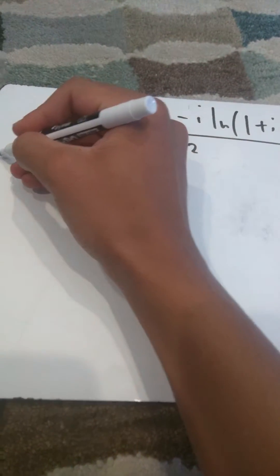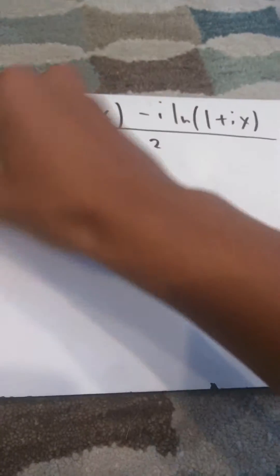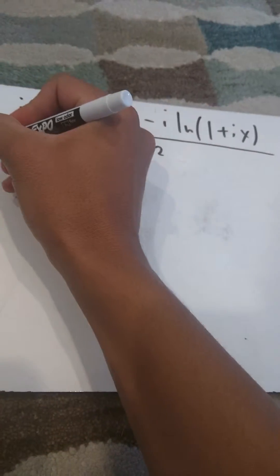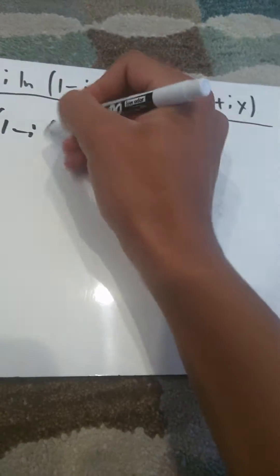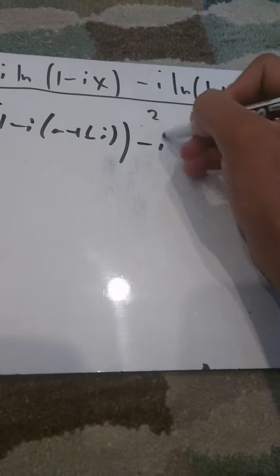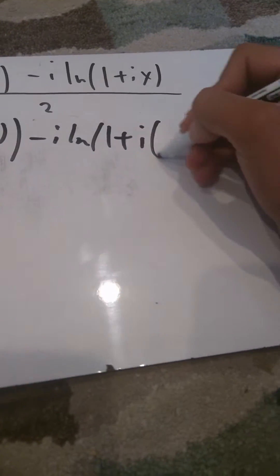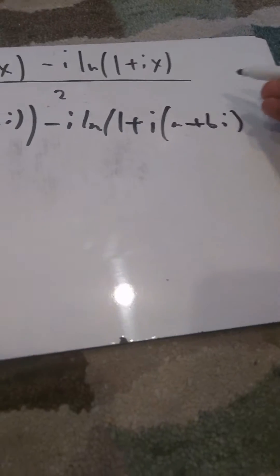So we have i ln of 1 minus i times (a + bi), minus i ln of 1 plus i times (a + bi), all over 2.